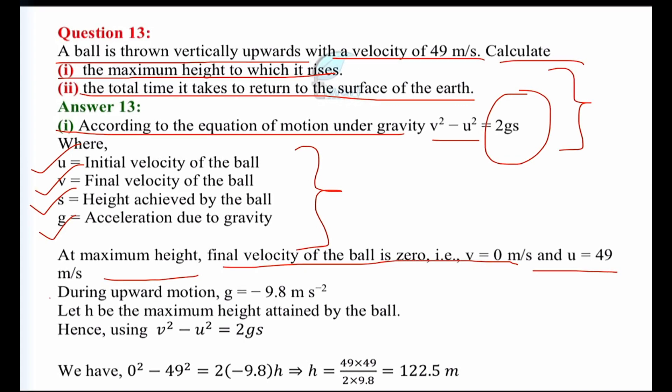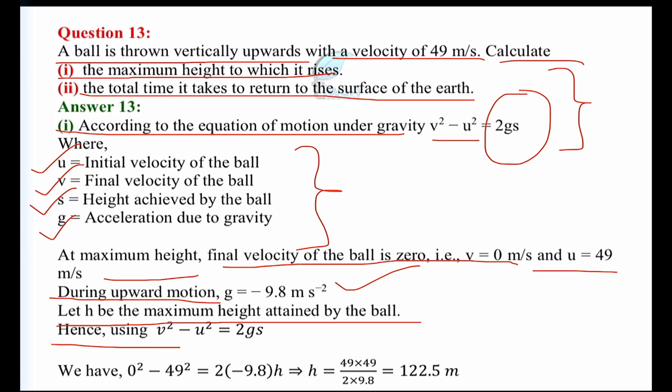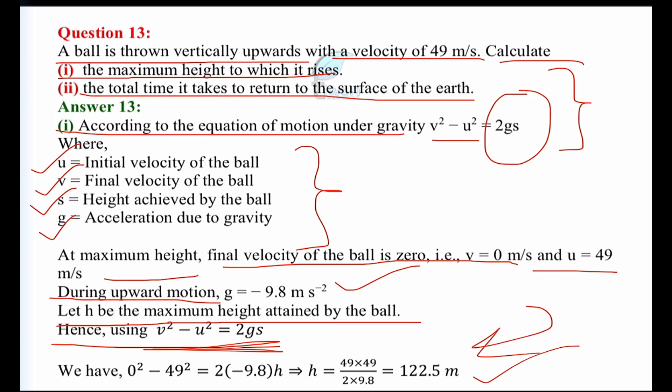The most important part: since the ball is thrown upward, it is acting against gravity. So the value of G will be taken as negative. We are working against gravity, so G is in the opposite direction. The maximum height attained by the ball is then found by cancelling the minus signs.